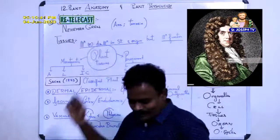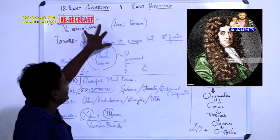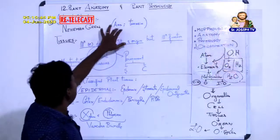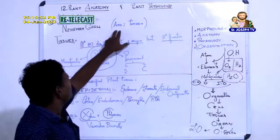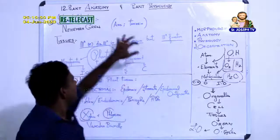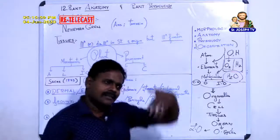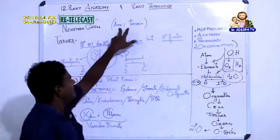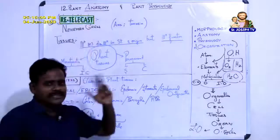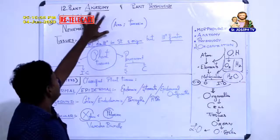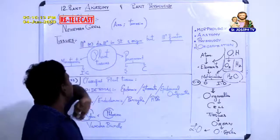The word 'anatomy' is a Greek word derived from two important words: 'ana' and 'temnia.' Ana means internal or inside, and temnia means to cut. So anatomy means the study of internal structure — cutting inside to study. This is the meaning of anatomy.